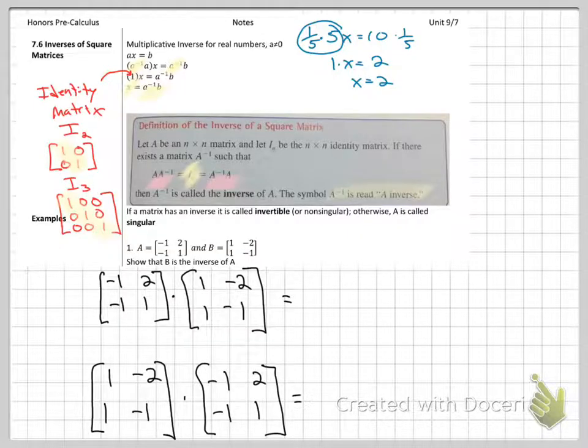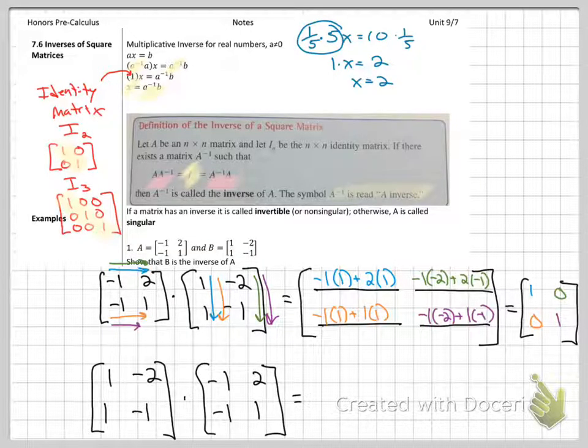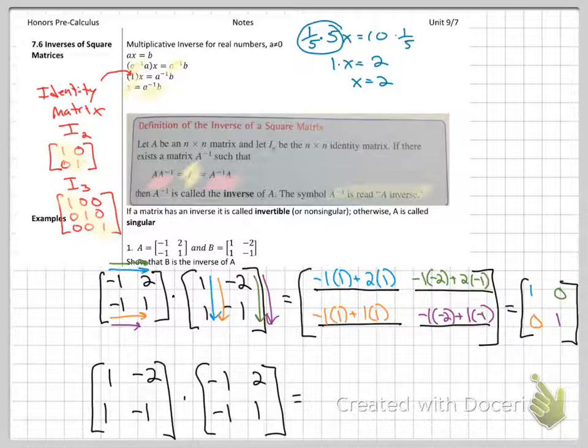So this is good practice of multiplying matrices that we just learned last class. Why don't you try to do the top one? Okay, I showed my work as best I could. When you multiply A times B in that order, you do get the identity matrix, 1, 0, 0, 1.